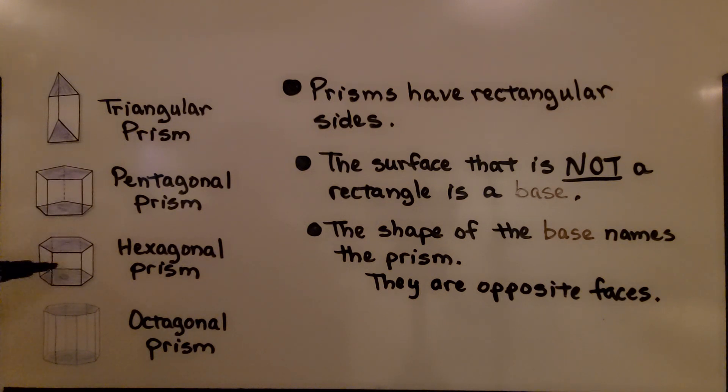You can see the rectangular sides on all of these. The surface that is not a rectangle is a base. The shape of the base names the prism—they're opposite faces. This has a triangle on the top and bottom as its bases, that's a triangular prism.